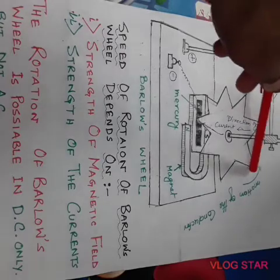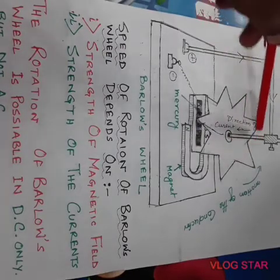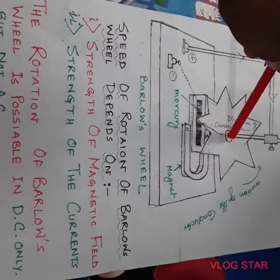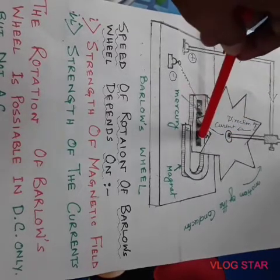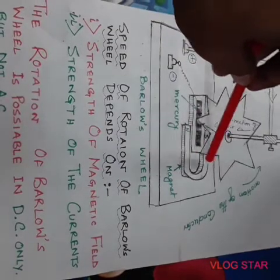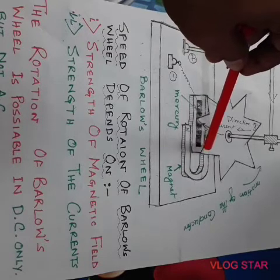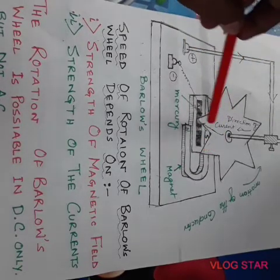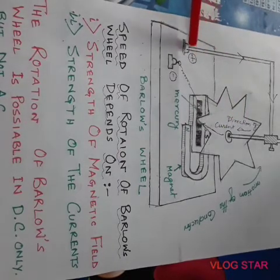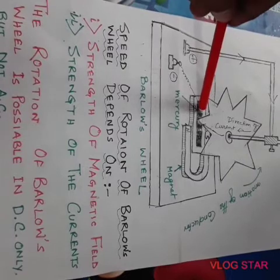Barlow's wheel consists of one star-shaped copper wheel placed vertically, which rotates around a horizontal axis. A box containing mercury is kept between a U-shaped strong magnet such that each prong of the star-shaped wheel will dip inside the mercury.